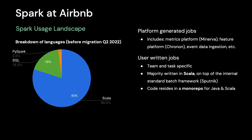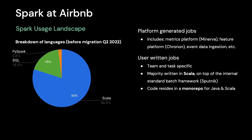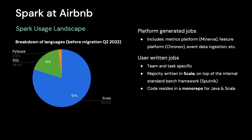To better understand our migration effort, let's take a look at the language breakdown of our Spark jobs. Scala dominates at 80%, followed by SQL at 18%, and only a small fraction use PySpark. This is due to our data engineering community's preference for Scala over SQL in the past. We also have an internal Spark platform called Spoonic, written in Scala and used by most of our jobs. If you are interested in Spoonic, please check out the talk from the 2020 Data AI Summit. A Spark job is either generated by a platform or written by users. For example, our metrics platform, Minerva, generates thousands of daily Spark applications based on user configuration. Data engineers also write their Spark jobs directly in SQL and Scala. In this talk, we focus on the migration of user-written jobs.